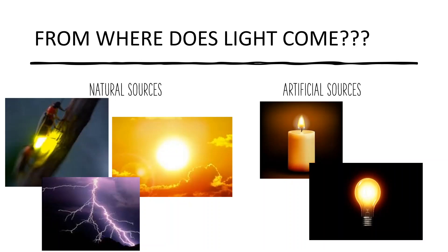Light comes from two sources: natural sources and artificial sources. Natural sources are natural objects like the Sun, which emits its own light without taking it from anywhere. Also lightning — when it is raining and thundering, you see lightning in the sky. And a firefly: a few living organisms like the firefly emit their own light. This is called bioluminescence.